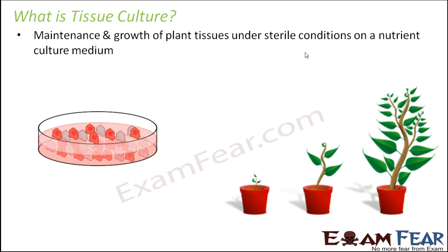Sterile means totally clean — totally germ free, so there should be no germs. Under those clean conditions, on a nutrient culture medium, in the laboratory itself you can produce new plants from just one single plant cell or tissue. With this technique you are completely independent of environmental factors and land requirements. You can grow thousands of plants simultaneously in your lab, making tissue culture an excellent technique to grow more plants in a shorter period of time.